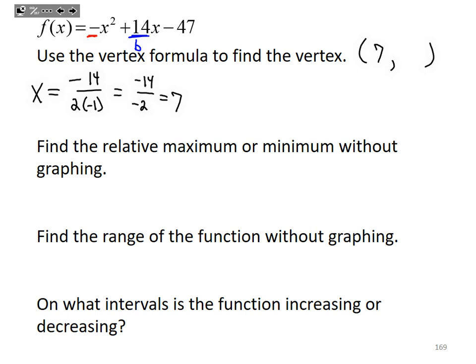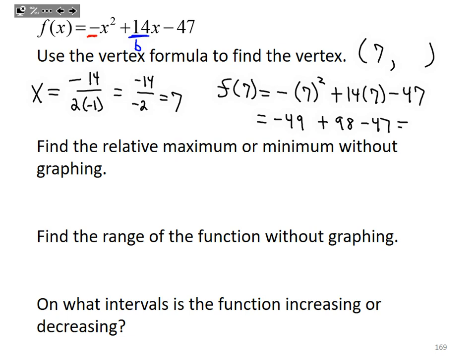To find the y-value, I take x = 7 and plug it into the function: f(7) = -(7)² + 14(7) - 47. Be careful with signs — when you have -x², you square first then take the negative. So: -(49) + 98 - 47. That gives -49 + 98 - 47. Combining -49 and -47 gives -96, and -96 + 98 equals positive 2.